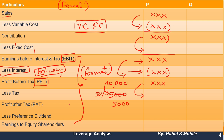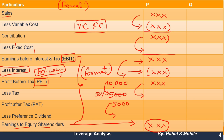From Profit After Tax, deduct preference dividend to get Earnings to Equity Shareholders. This final figure is needed in some leverage questions to calculate EPS. If there is no preference dividend, then Profit After Tax itself equals Earnings to Equity Shareholders. This completes the leverage format.